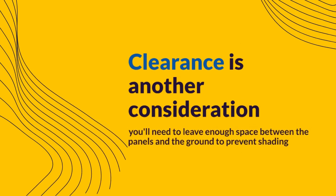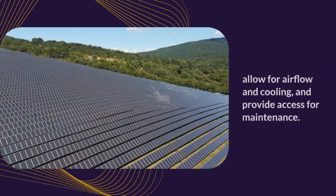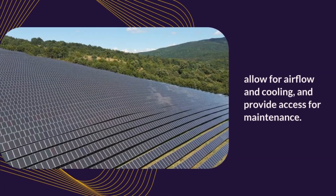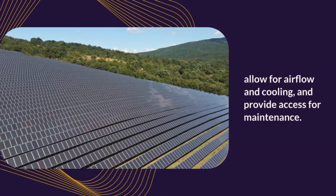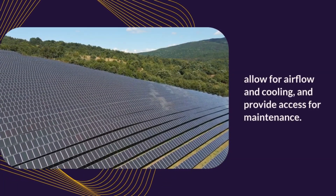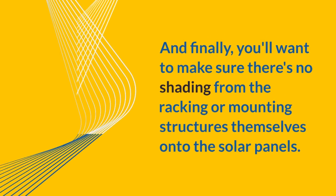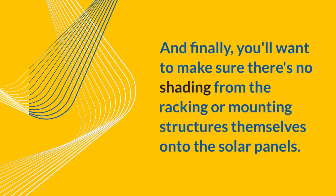Clearance is another consideration — you'll need to leave enough space between the panels and the ground to prevent shading, allow for airflow and cooling, and provide access for maintenance. And finally, you'll want to make sure there's no shading from the racking or mounting structures themselves onto the solar panels.